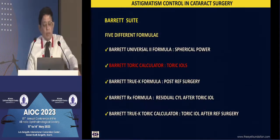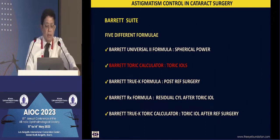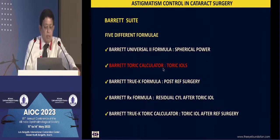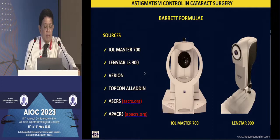We already alluded to the choice of formula. The Barrett Toric Calculator is what we use in our practice — not the Barrett Universal 2, but specifically the Barrett Toric Calculator for most of our patients. It is available in many optical biometers as well as on the ACRS/APACRS websites.